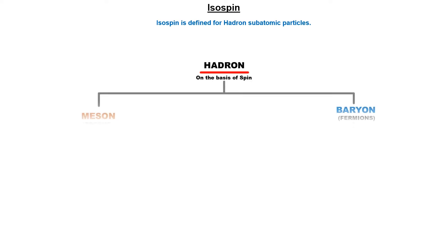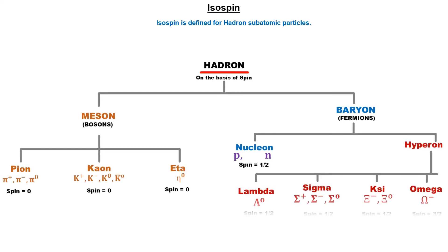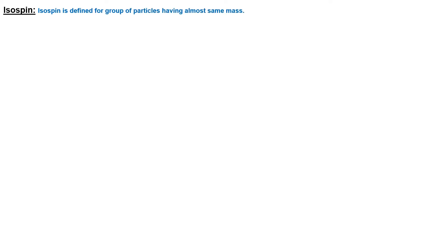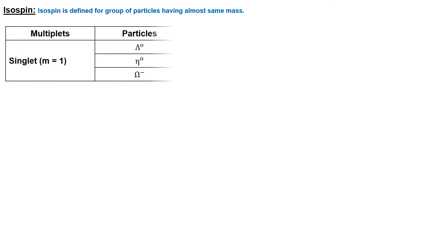Isospin is defined for those subatomic particles that interact via the strong force. Such particles are called hadrons. Hadrons include mesons and baryons. Isospin was introduced to describe groups of particles that have almost the same mass. Among all hadron particles, some particles have a mass completely different from any other particle — these are called singlets.